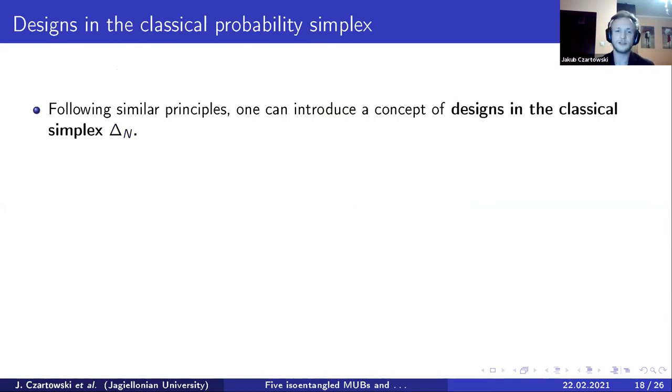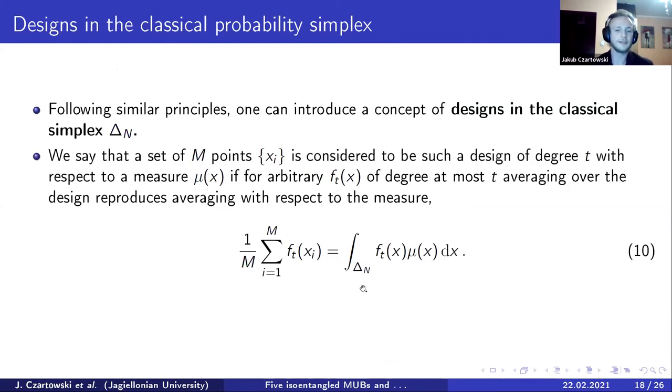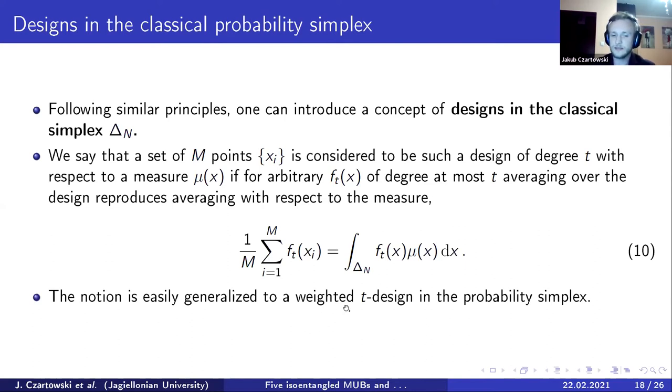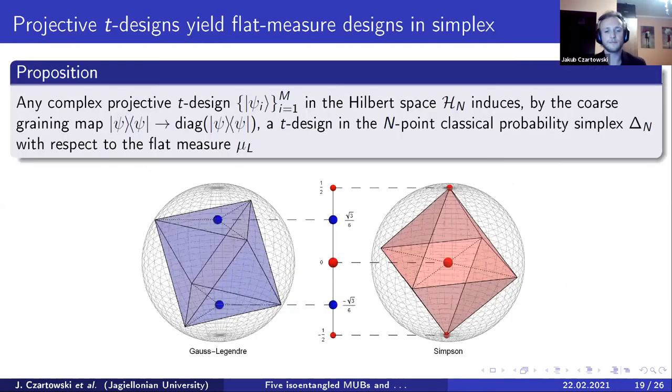Moving on to what I already mentioned about classical probability simplex, the similar structure can be defined for simple probabilities. Thus we say that endpoints are designs over this simplex if they reproduce the average over a selected measure. Now this measure can be taken as a flat Lebesgue measure or Hilbert-Schmidt measure, depending on what you prefer. It can be obviously generalized easily to weighted t-designs, and there is a nice property about projective t-designs and these kinds of designs. Any projective t-design yields a design over flat measure in probability simplex simply by the coarse graining map, and this can be represented by a simple projection onto the z-axis.